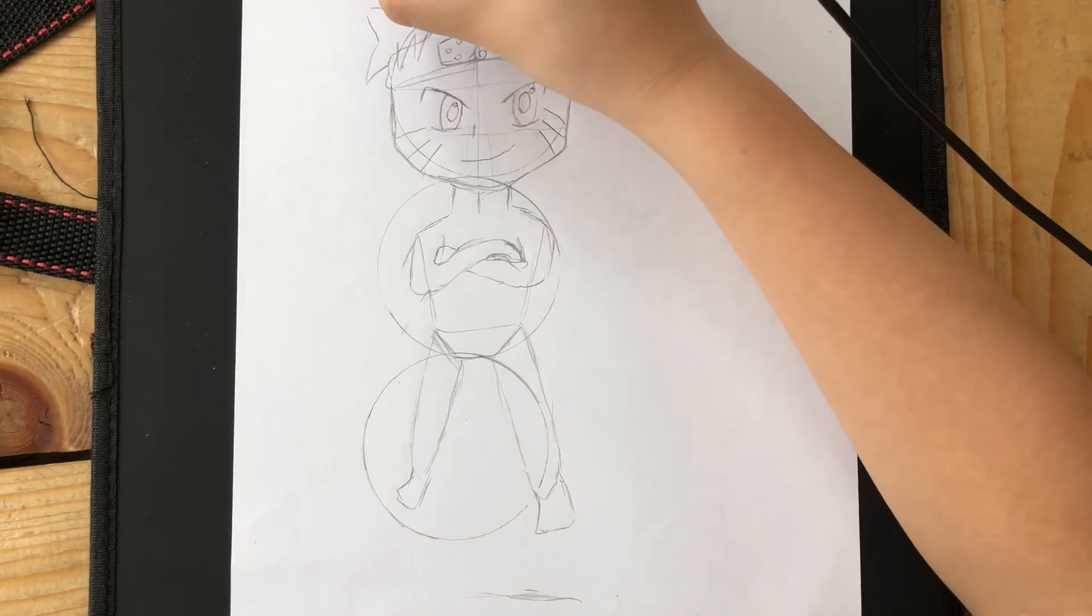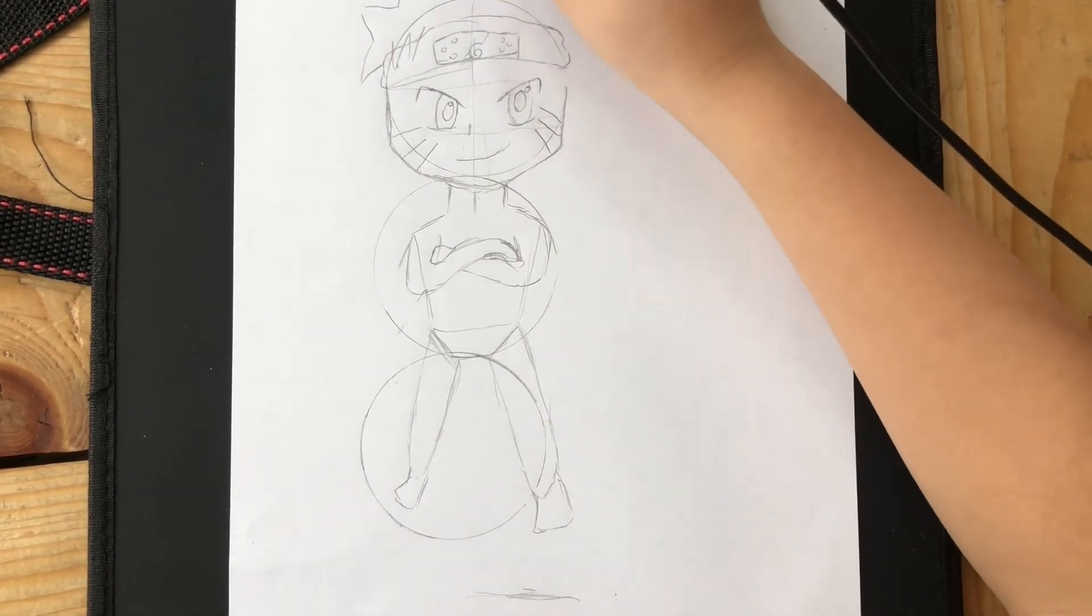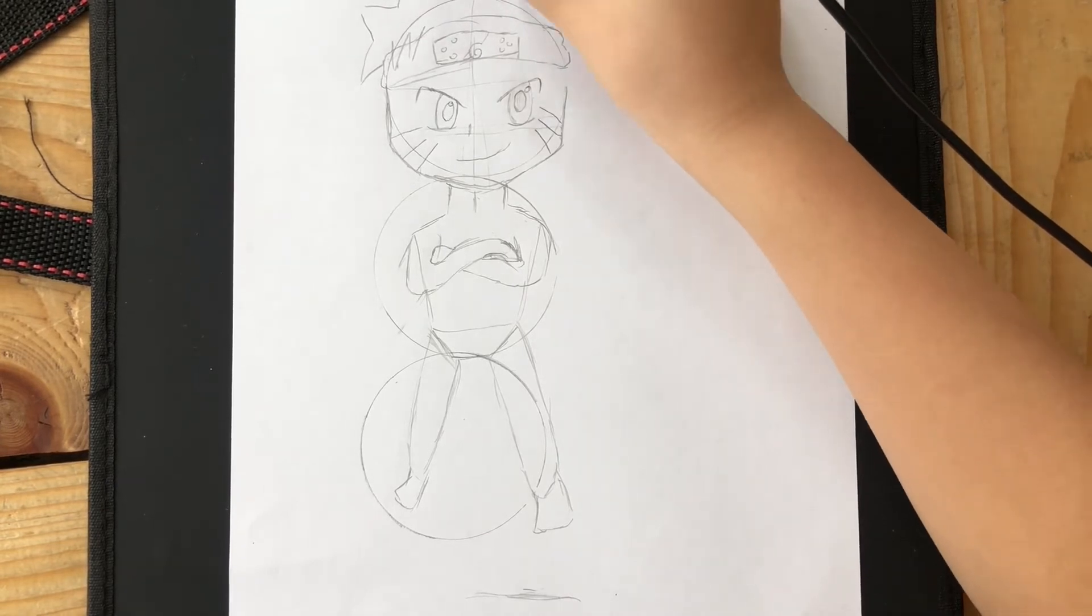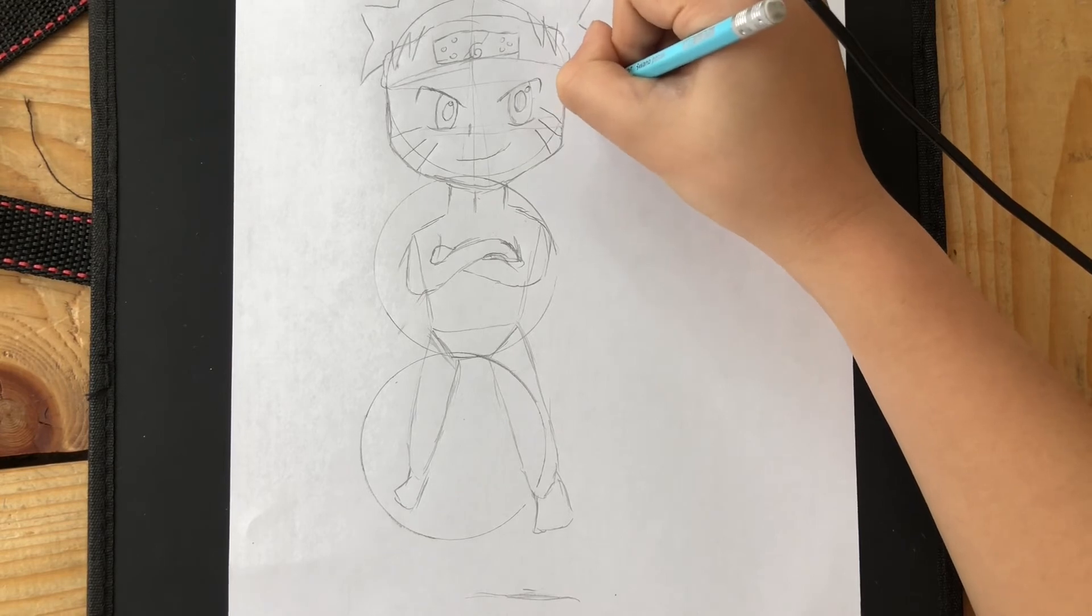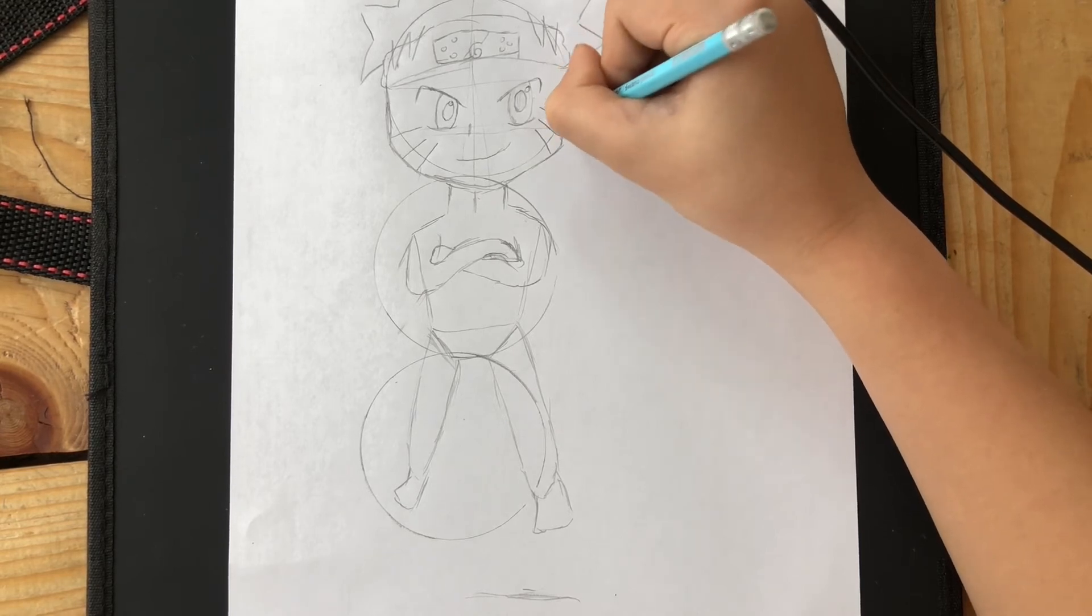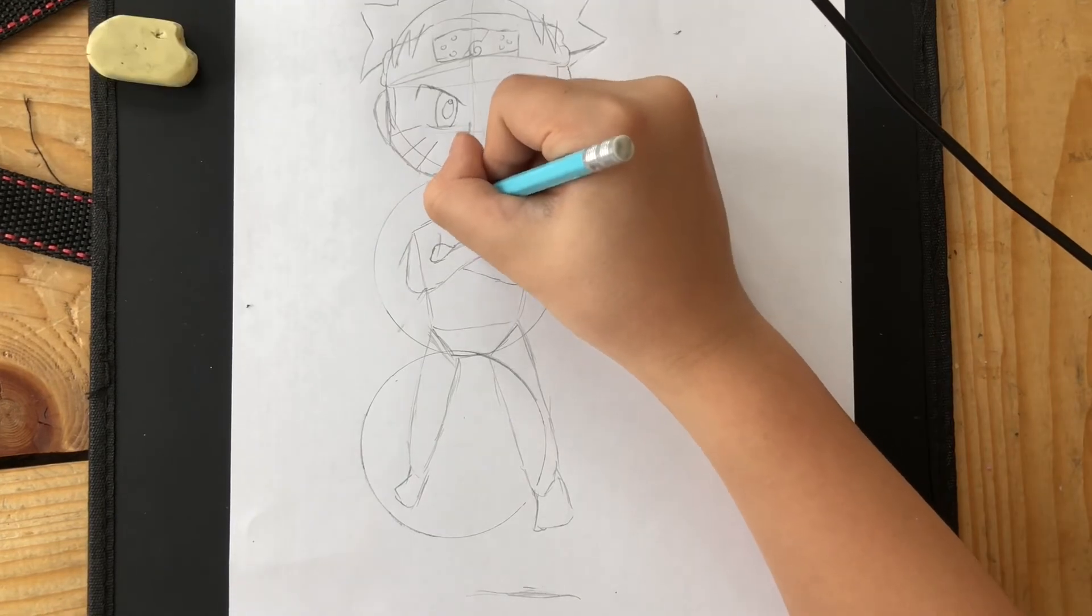Then you have to draw the hair. I don't recommend you to draw one hair at a time, because in anime we don't do that. Instead, we do huge triangles that look like spikes, and that means huge groups of hair. Then you can start drawing the clothes. You can design your own.